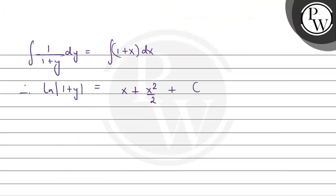Since we have y(1) = 0, let's substitute. We get ln|1| = 1 + 1/2 + C, and ln(1) = 0.